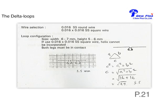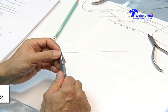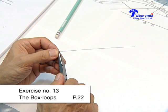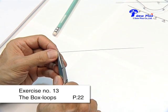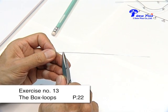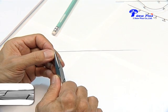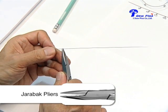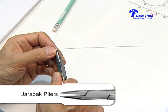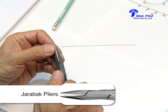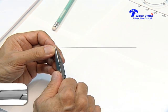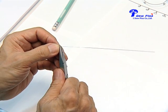Exercise number 12, the delta loop. Exercise number 13, the box loop. The box loop is used to align the canine. Its application is to increase the flexibility of the arch. It can be used to rotate and derotate the canine and to improve the mesial-distal inclination of the canine, as shown here.